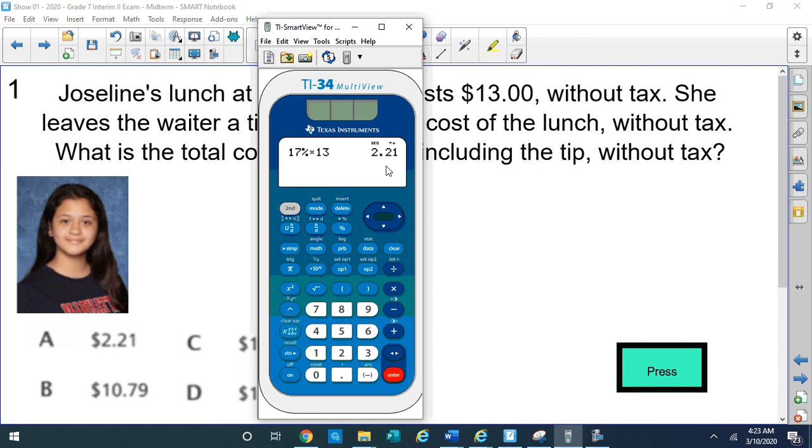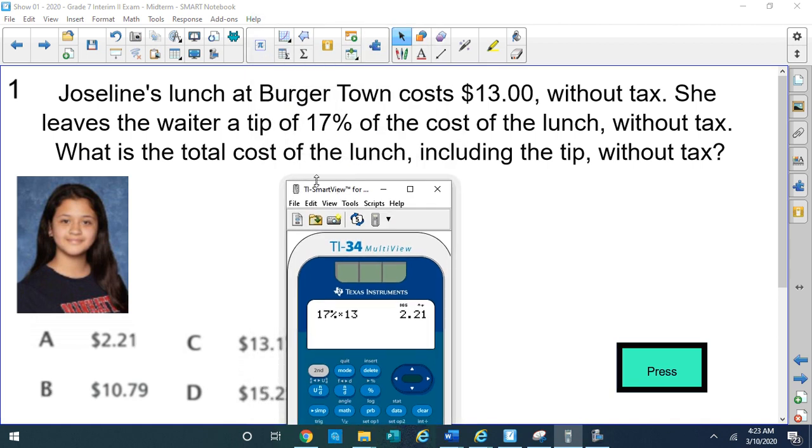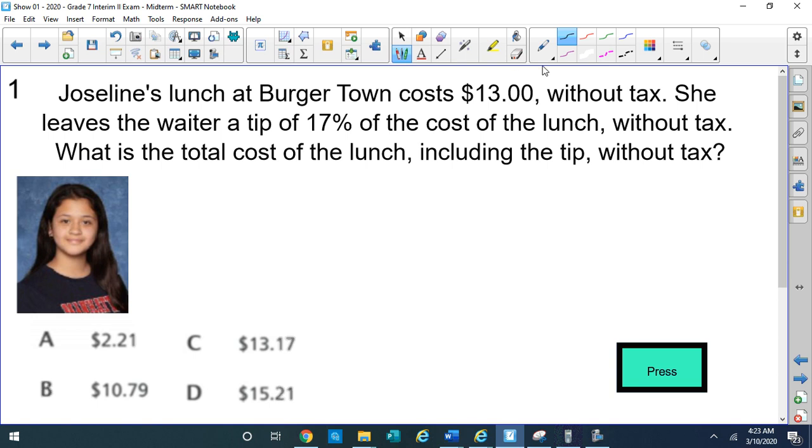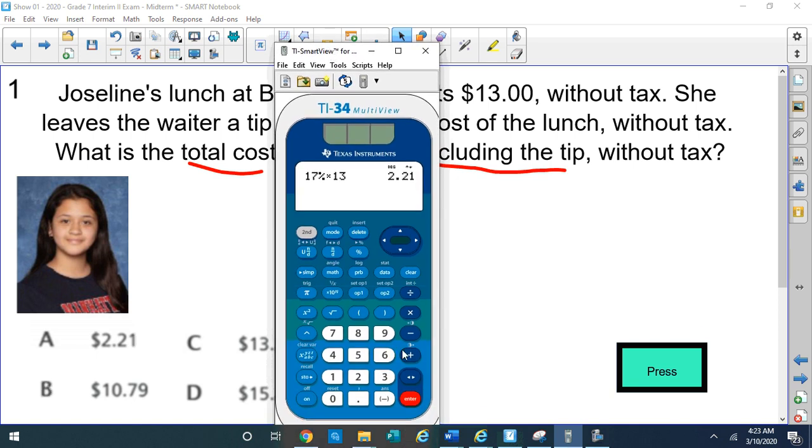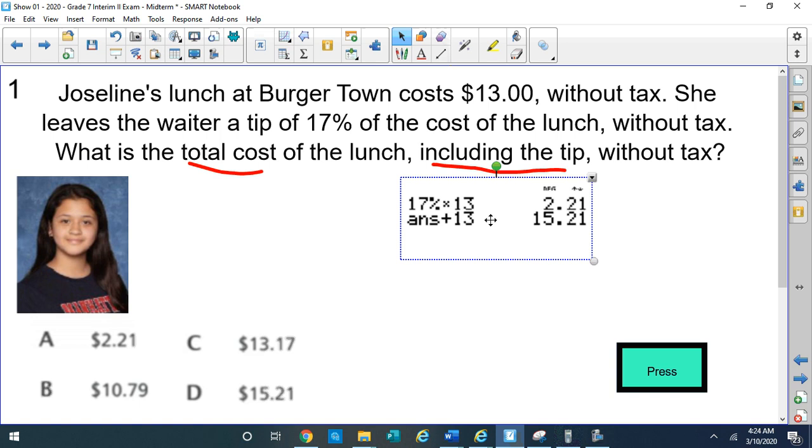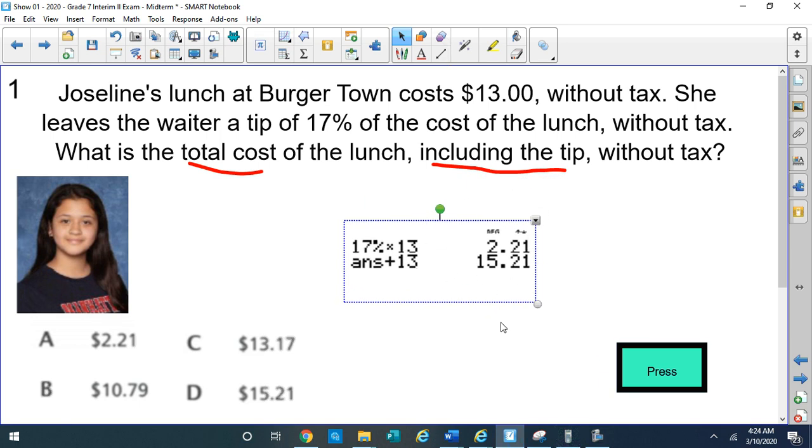And remember, tip is extra money for the waiter or waitress giving you good service. So I'm going to look at the question one more time just to see what they're asking for. They're asking for the total cost. That means everything you pay, including the tip, and that's without tax. So let's go back to the calculator, because we have to not only leave the tip of $2.21, we also have to pay for the meal, which is $13. So let's add $13 to that amount of $2.21, and that'll give us $15.21, which Jocelyn will have to pay. And that is choice letter D. So if you chose choice D, you're in good shape. And now, Jocelyn, enjoy your meal.